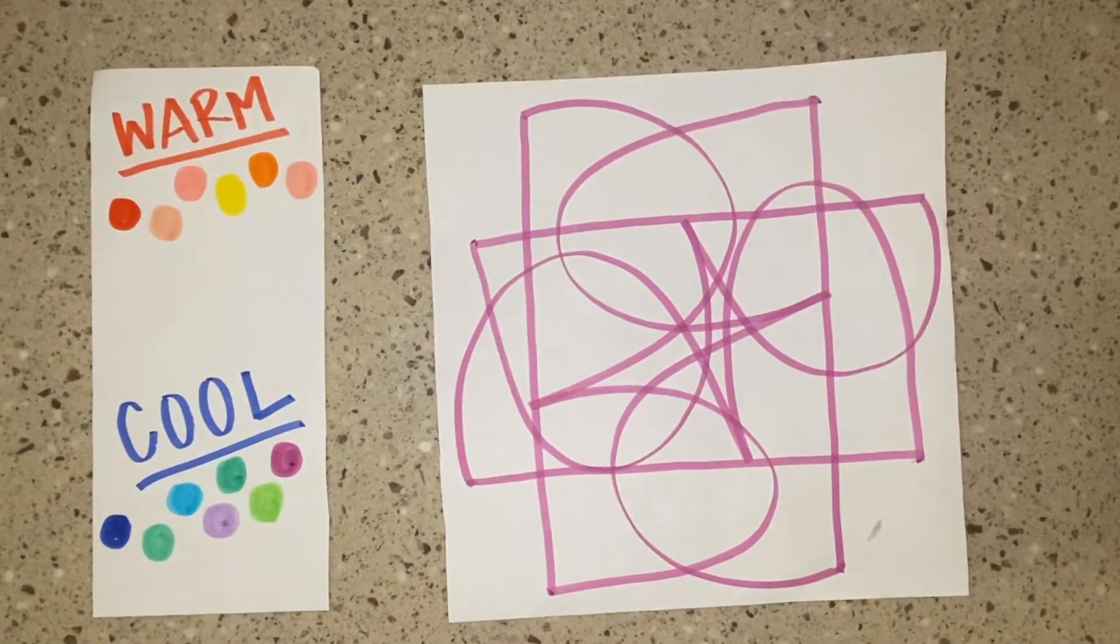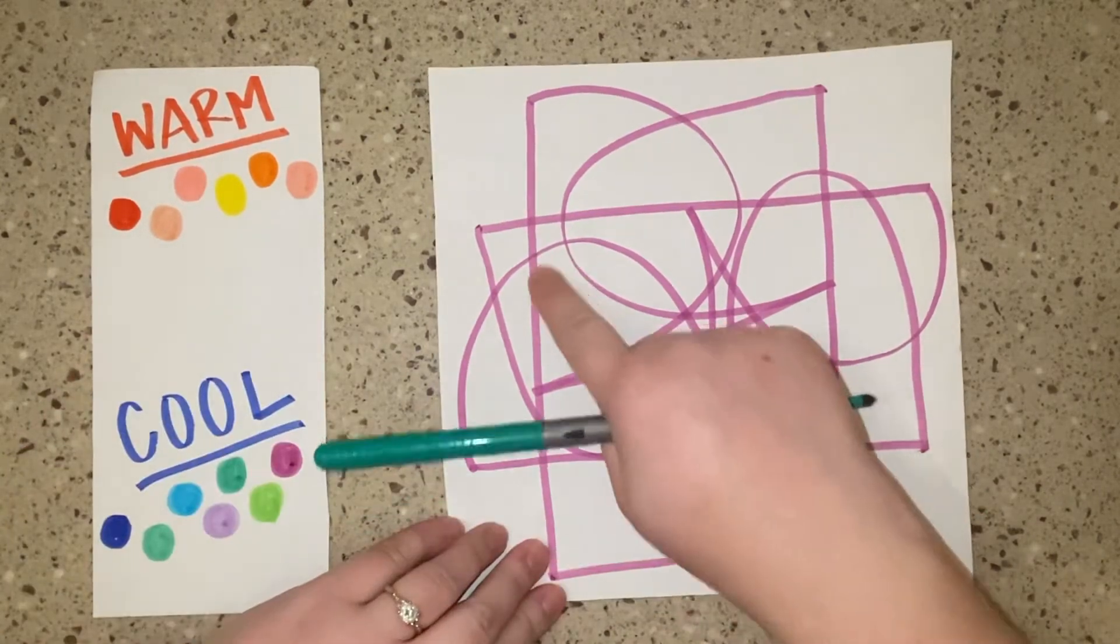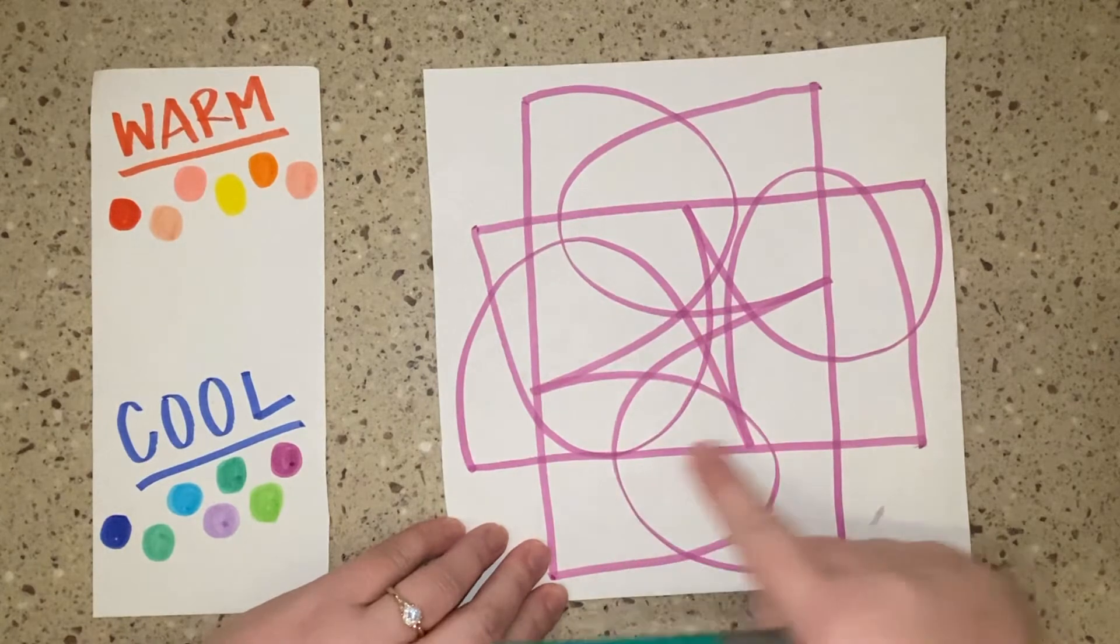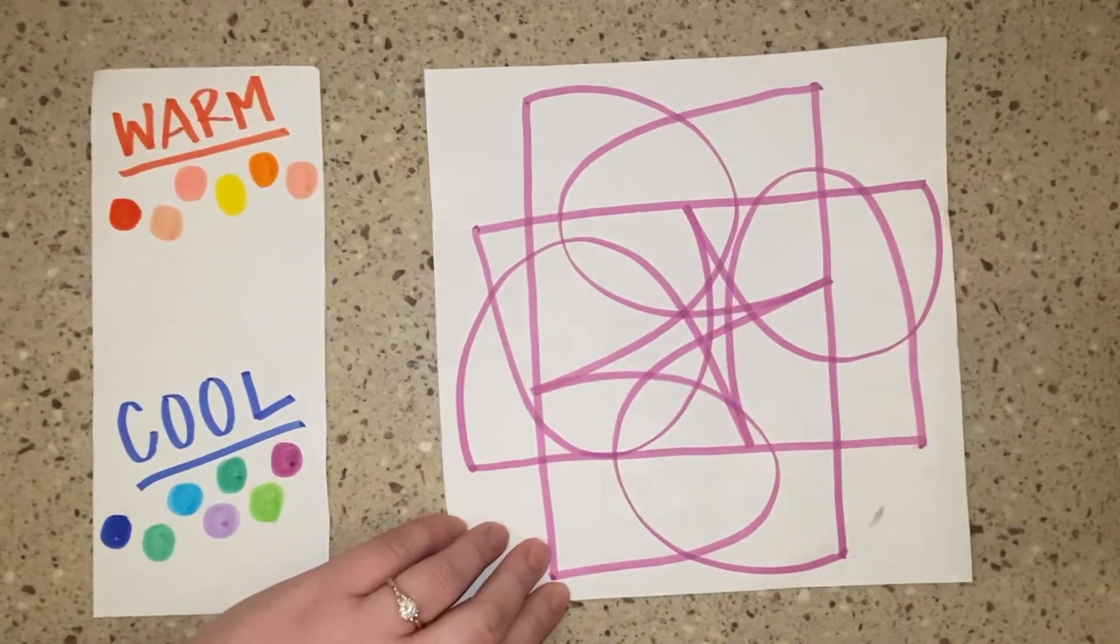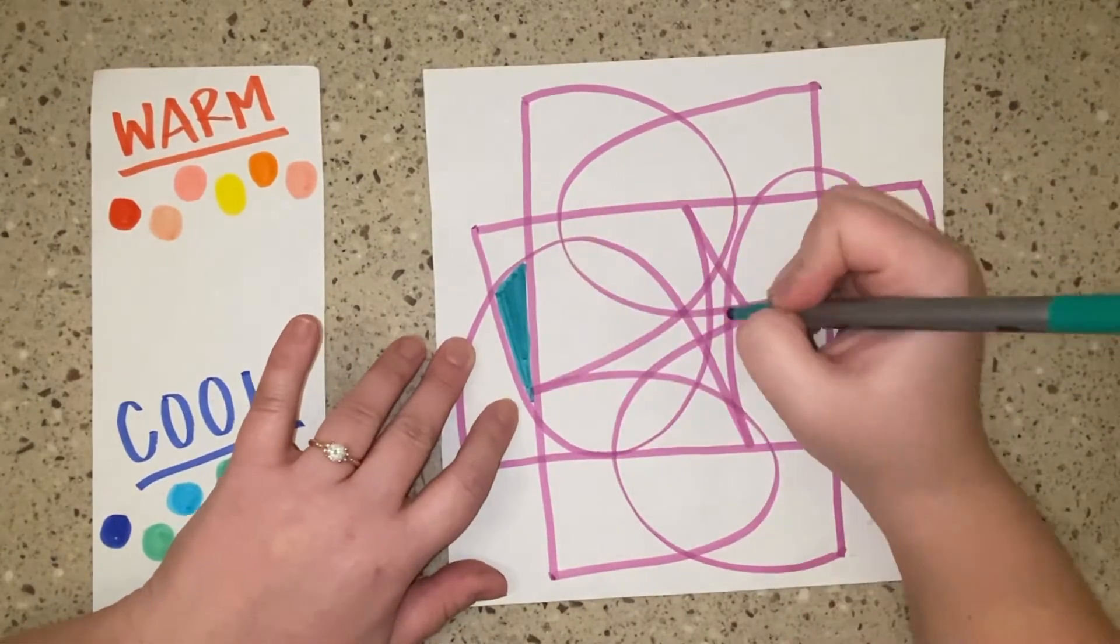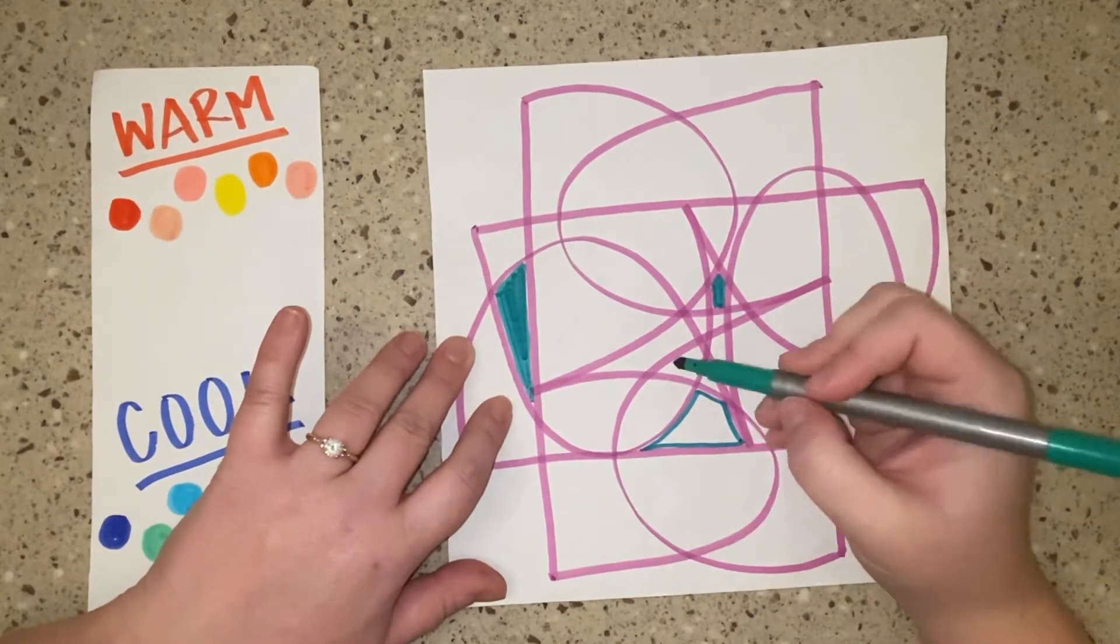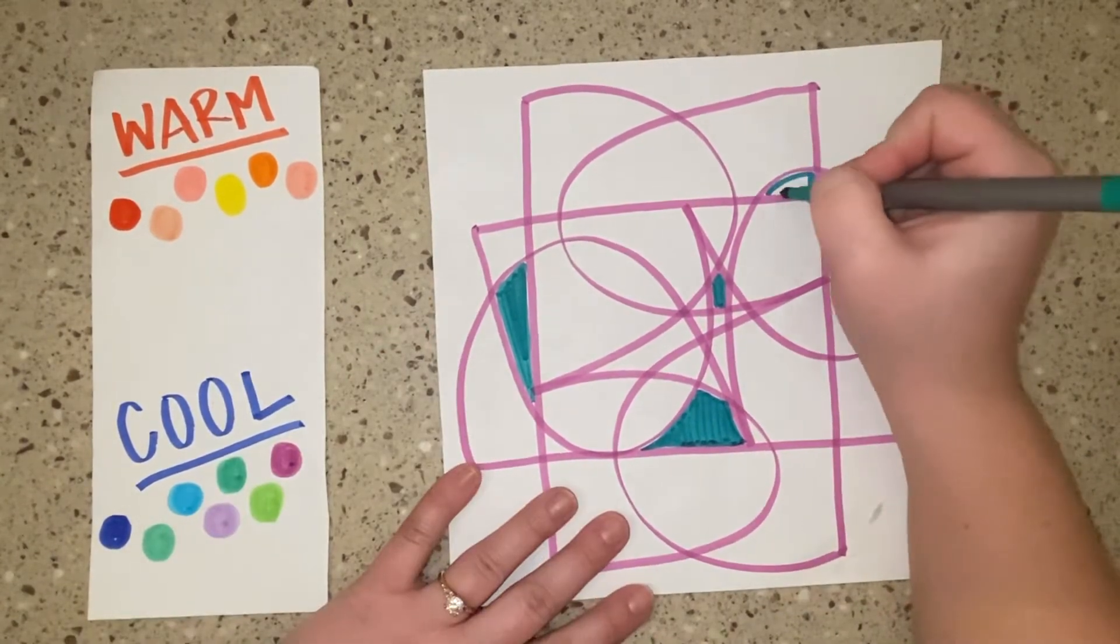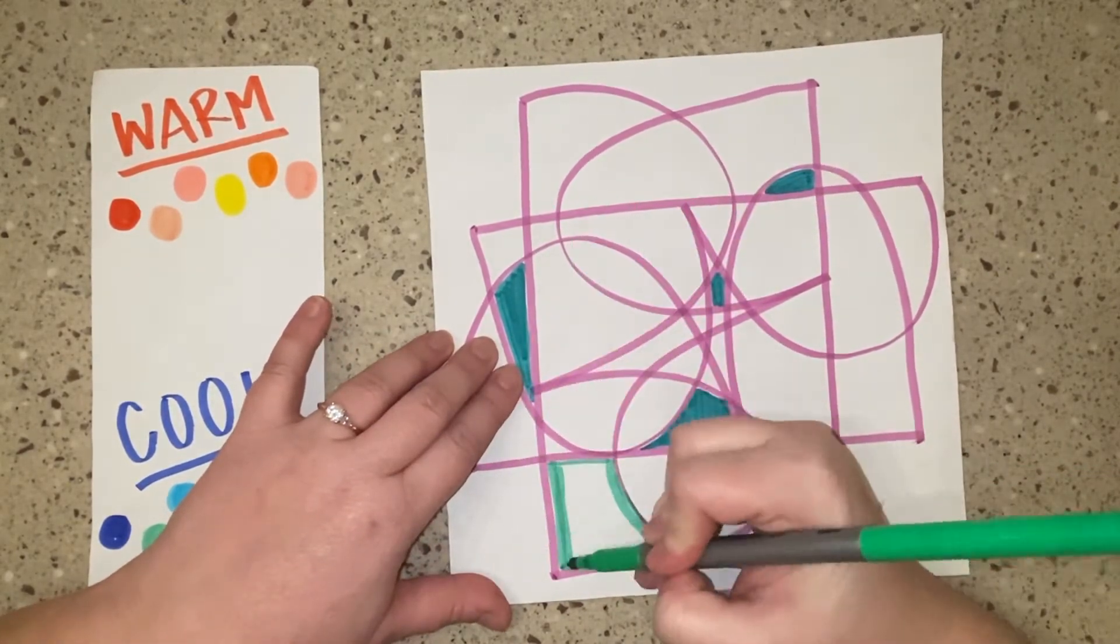Since I used purple, I'm going to stick with the cool color scheme so I can fill these sections using blues, greens, and purples, all of the cool colors. Make sure you take your time, fill all the white spaces. You can use markers, crayons, and colored pencils to get the different colors. You don't have to just use one supply.